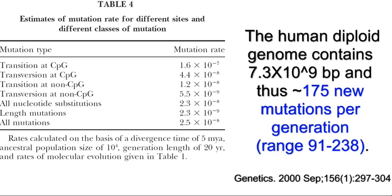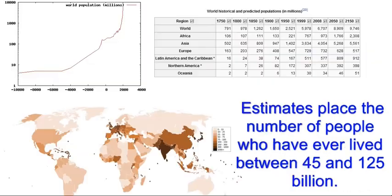There are 6 billion people walking around, each of them a mutant at multiple locations. There are about a million times that number of bacteria living on a single human body.